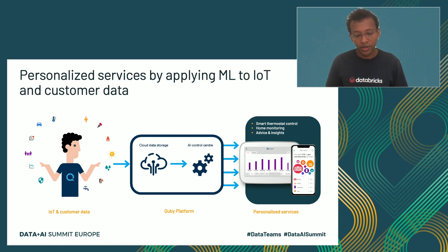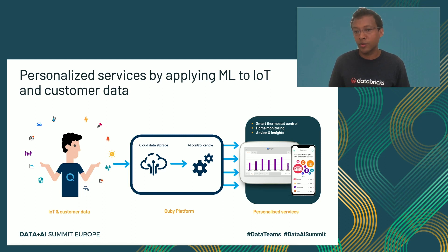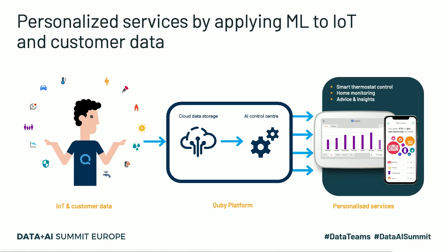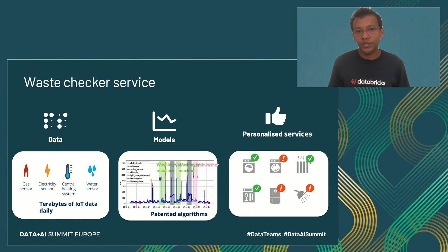We collect all this data and store it in our big cloud storage. At this time, we are collecting multiple petabytes of data. By combining this data, we provide services for customers. The main service is enabling the customer to control their smart thermostat remotely via their mobile app. All customers can monitor their houses, as well as get advice and insight about their energy usage. Let's highlight one of our most popular use cases, which we call the waste checker service.